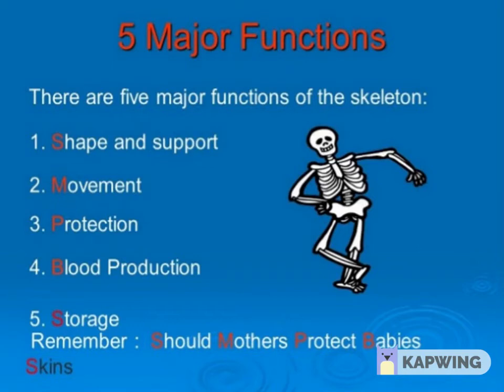And the last one is storage — it stores calcium. Now, there is a key line to help you remember these 5 points: 'Should mothers protect babies' skin?' From S — shape and support; from M — movement; from P — protection; from B — blood production; and from S — storage. This is a key line to remember these 5 major functions.